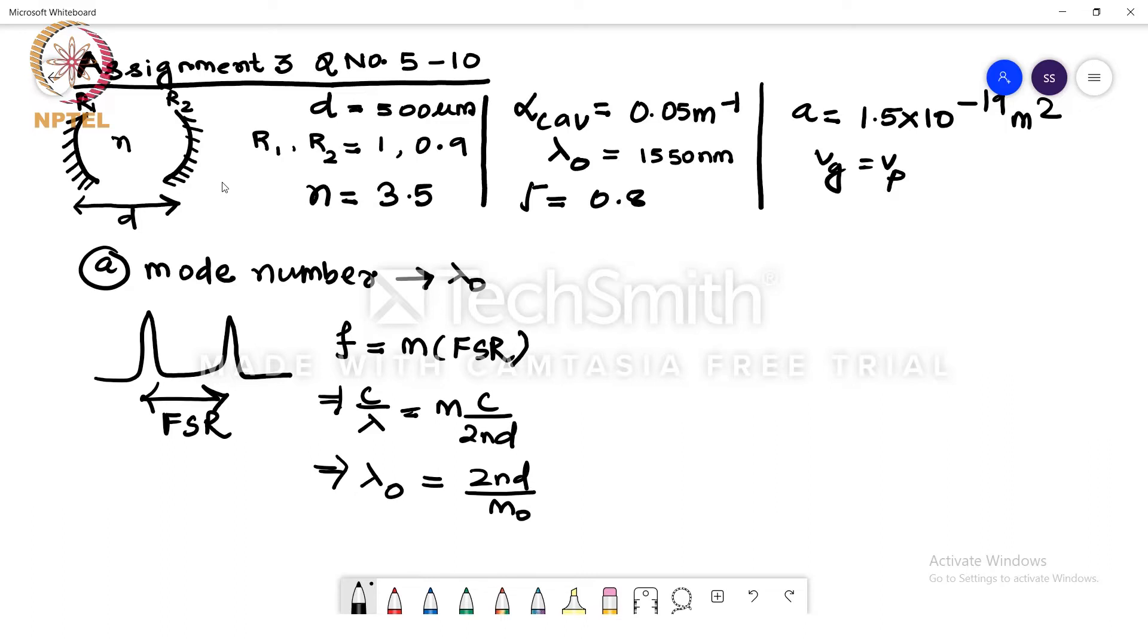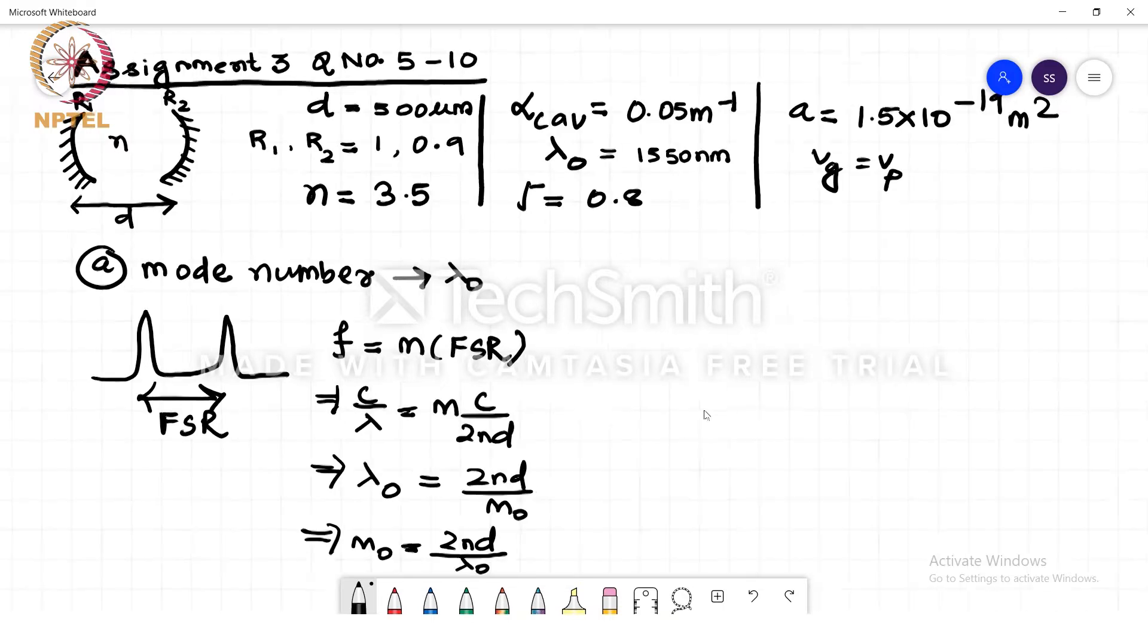let us represent the central mode number as m0, 2nd by m0. Now m0 equals 2nd divided by lambda 0. So we have all the information given to us here, so we need to just substitute.